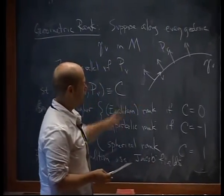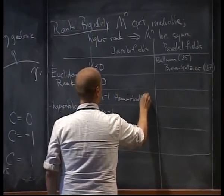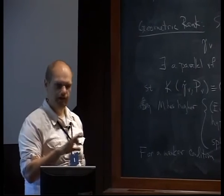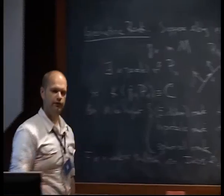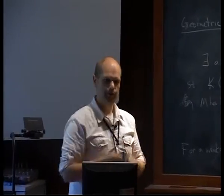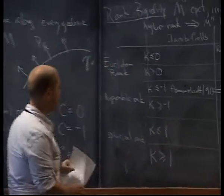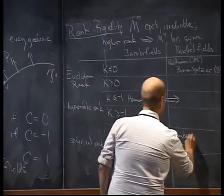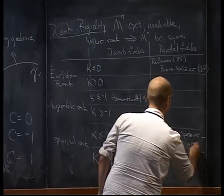The next positive result concerns hyperbolic rank, due to Ursula Hamenstadt from 1991. She showed that if your curvature is bounded above by minus one and you have higher hyperbolic rank, then you're locally symmetric. She proved this for both the parallel field and weaker Jacobi field conditions — when curvature is extremal these two are equivalent, as Jacobi fields become scaled parallel fields. The last positive result, due to Shankar, Spatzier, and Wilking from 2005, covers higher spherical rank: curvature bounded above by positive one implies locally symmetric.